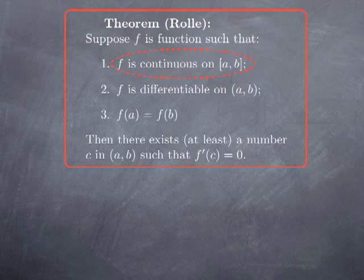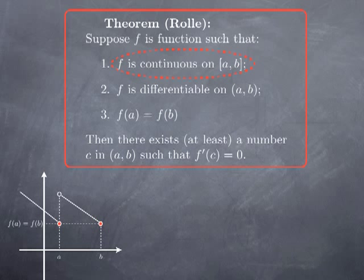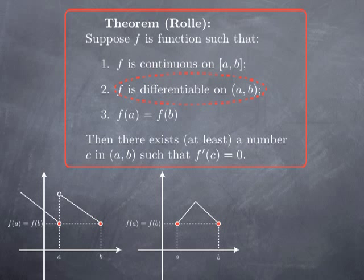Each one of these three assumptions is essential to obtain the conclusion. Continuity is essential: if we consider a function with one discontinuity, even though it is differentiable on the open interval and takes the same value at endpoints a and b, the slope of the tangent line is never zero. We can also have a function that is continuous on the closed interval and takes the same value at the endpoints, but fails the conclusion because there is one corner point where it's not differentiable — that's enough to make the conclusion fail.